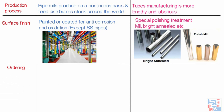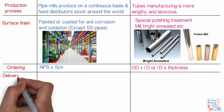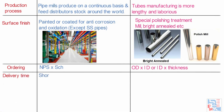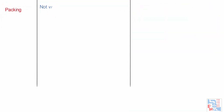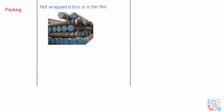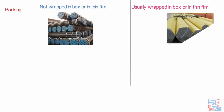When ordering, pipe ordering description is NPS × schedule, whereas for tubes the ordering description is either OD × ID or OD × thickness. From the point of view of delivery time, pipes typically take shorter time to deliver as compared to tubes. For packing, in the case of pipes we just want to protect the pipe surface from serious damage, so minimal packing is used, whereas tubes are usually packed in wooden boxes or thin film.